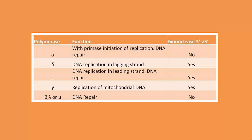DNA delta polymerase is implicated in replication of the lagging strand. DNA epsilon polymerase is implicated in the replication of the leading strand and it also has DNA repair mechanisms. DNA gamma polymerase is implicated in replication of mitochondrial DNA, and beta, lambda, and micro DNA polymerases are involved in DNA repair.